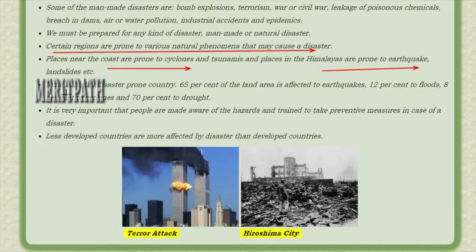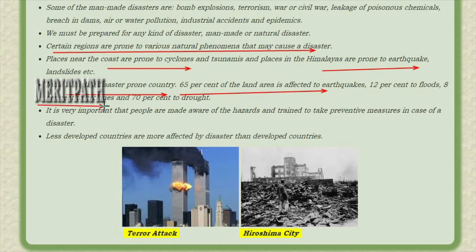India is a highly disaster-prone country. 65% of the land is affected by earthquakes, 12% by floods, 8% by cyclones, and 70% by drought. It is very important that people are made aware and try to take preventive measures in case of a disaster.